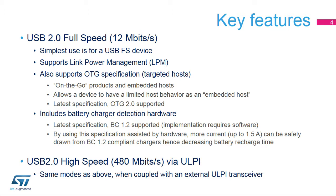The battery charger detection function allows for increased current to be drawn from BC 1.2 compliant chargers up to 1.5 amps. USB 2.0 high-speed is also available via the ULPI interface. The same modes of operation are possible when coupling with an external ULPI transceiver.